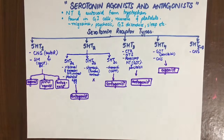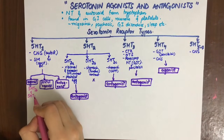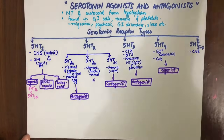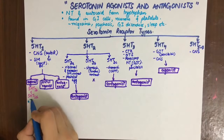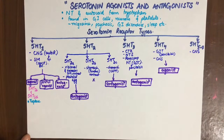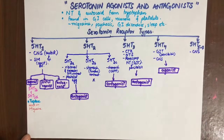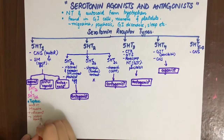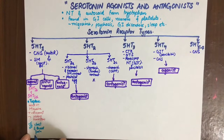The 5-HT1 agonists mainly act on 5-HT1B and 5-HT1D receptor subtypes. The first drug we'll discuss is from the triptans group. They are mainly used in migraine for two main reasons: they are vasoconstrictors and they restore blood flow to ischemic areas of CNS tissue. Side effects include chest pain and throat pain, and they are contraindicated in ischemic heart disease patients.